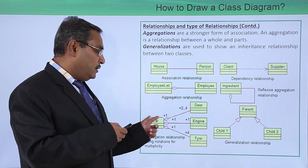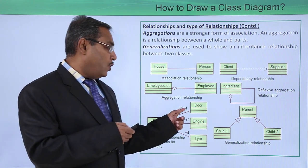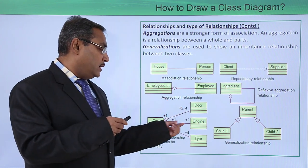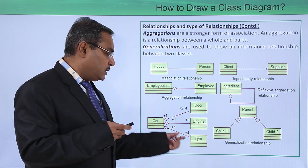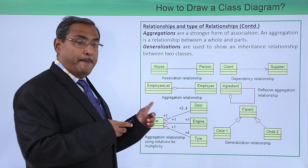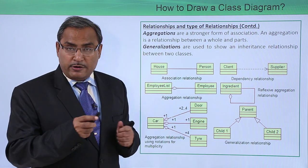And here you see this car. One car can have two or four, two to four number of doors. And this one car is having only one engine. And this one car might be having four tires. So in this way you can also mention the cardinality ratios.